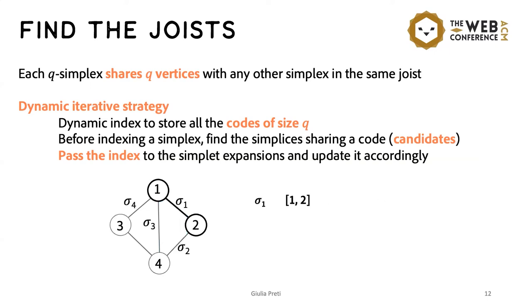We find and maintain the joists using a dynamic inverted index that ensures that simplices that can belong to the same joists are hashed together. And since each q-simplex shares exactly q vertices with any other simplex in the same joist, we use codes of size q. And each time a new simplex is added to the simplet, we search the index for other simplices that share a code with it. And all the simplices may form a joist together.